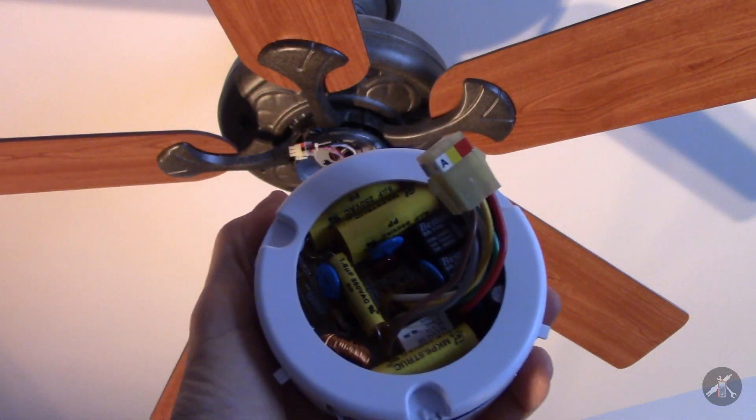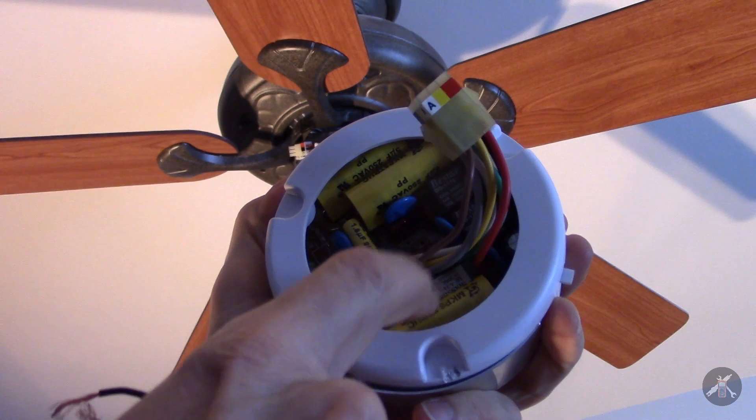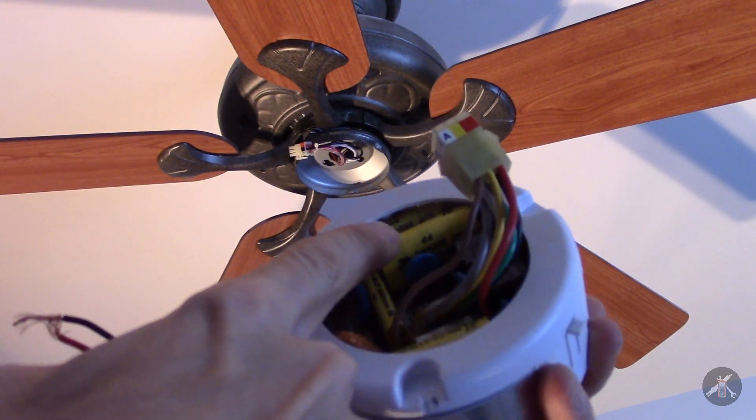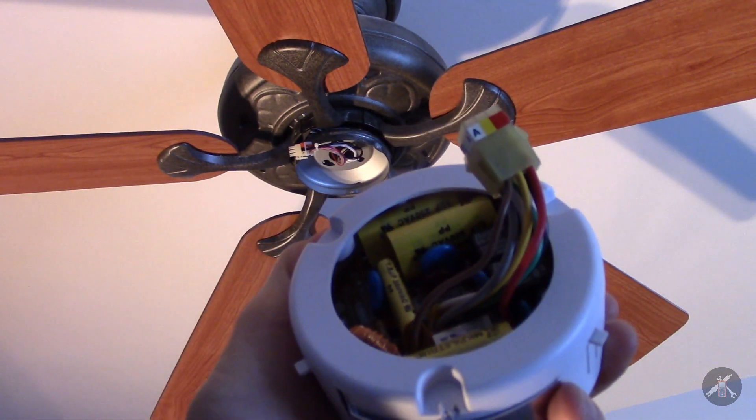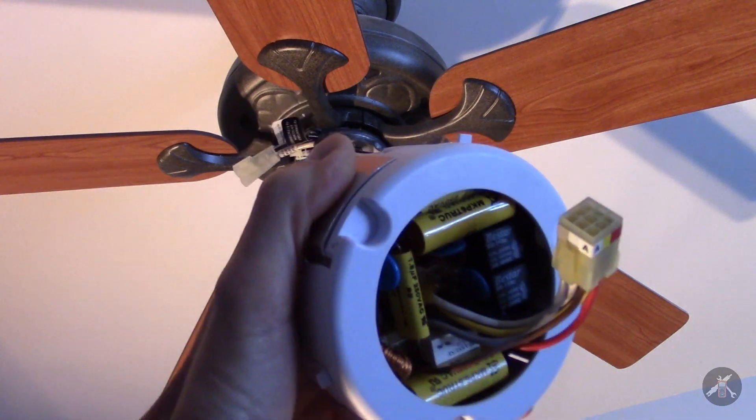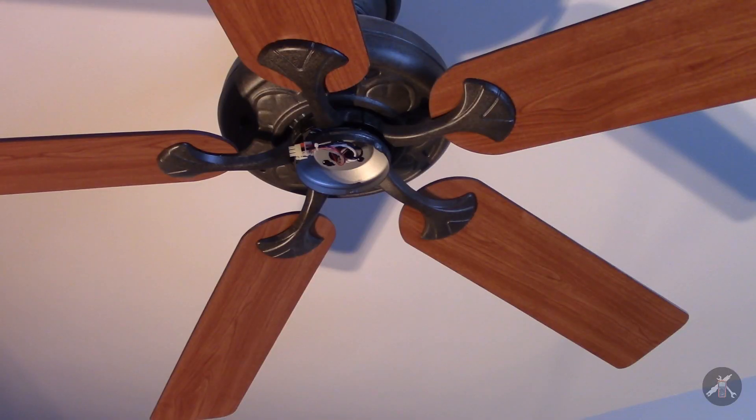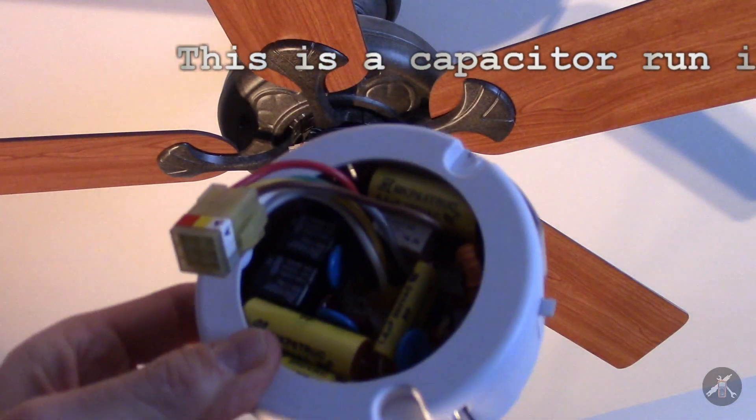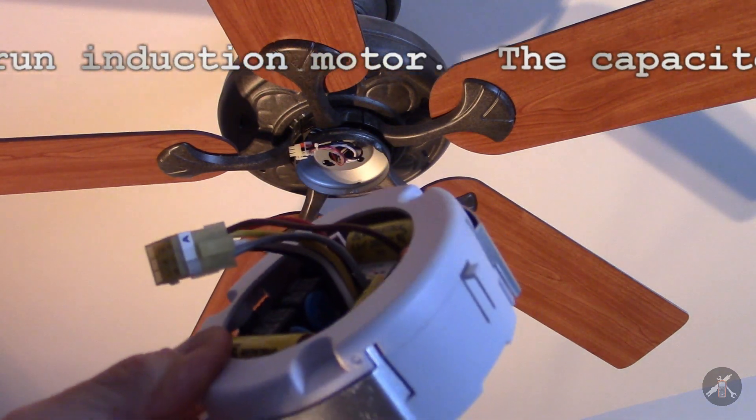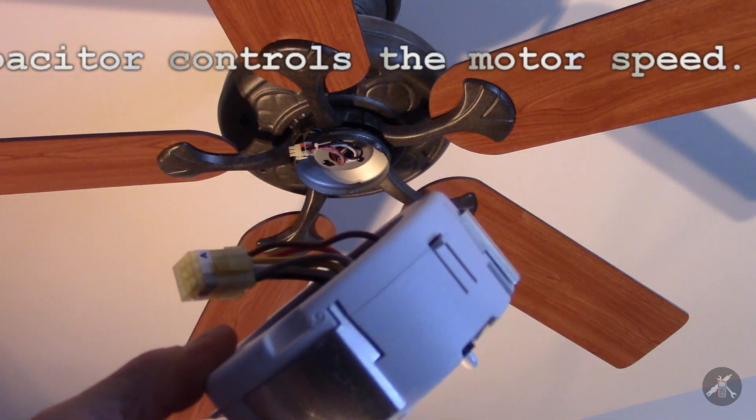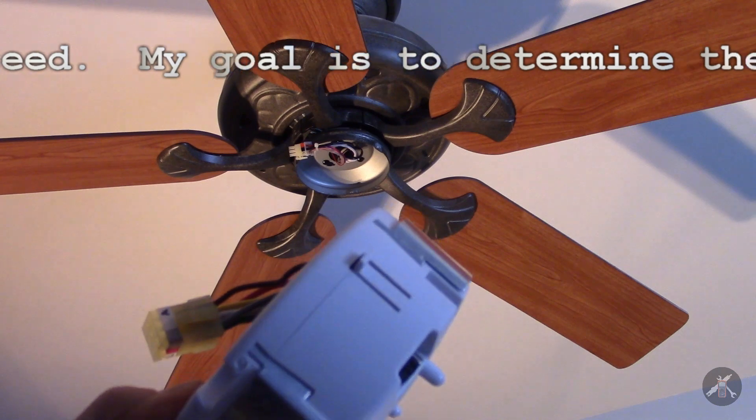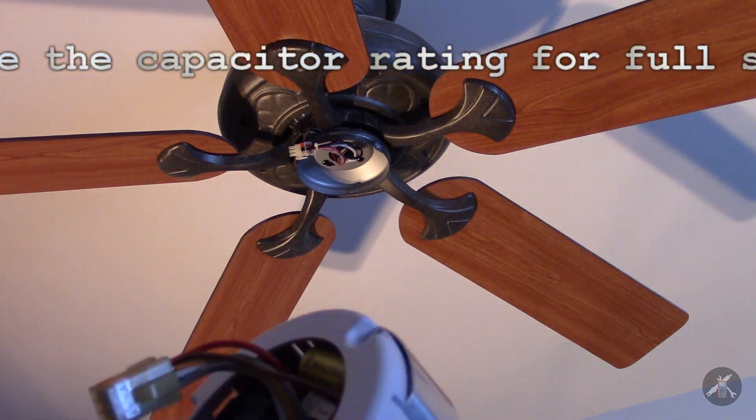I've gone through this box and there's a 6.5, a 6, and a 5 microfarad. Those are the big capacitors in the module. I can tell that the 6.5 appears to be wired between the white wire, the neutral, and the red wire for the motor winding.